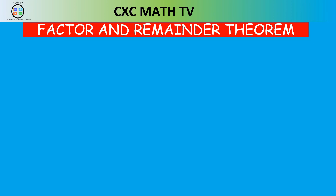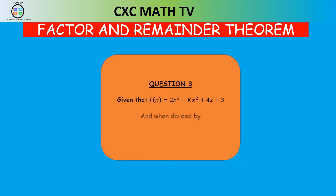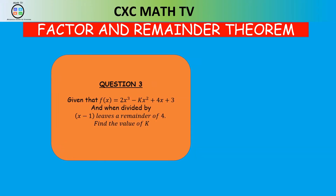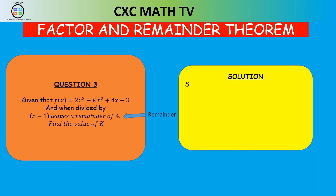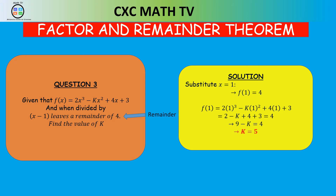Now look at this question: given f(x) = 2x³ - kx² + 4x + 3, and when divided by (x - 1) it leaves a remainder of 4, find the value of k. Since the factor is (x - 1), our a value is 1. So f(1) = 4. That gives us 2(1)³ - k(1)² + 4(1) + 3 = 4, which simplifies to 2 - k + 4 + 3 = 4. Transposing, we get k = 5.